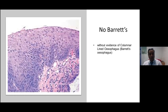The last scenario is where there is a query of Barrett's but under the microscope you see only esophageal-type squamous mucosa with no underlying columnar mucosa. Here we say the appearances are without evidence of columnar-lined esophagus or Barrett's esophagus.